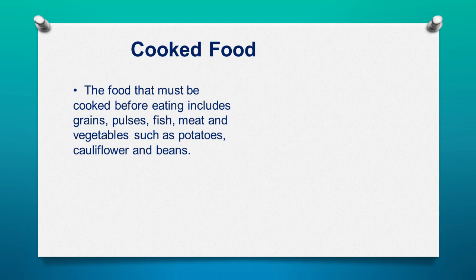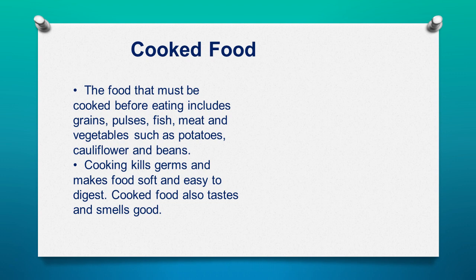The food that must be cooked before eating includes grains, pulses, fish, meat, and vegetables such as potatoes, cauliflower, and beans. Why do you think these food items should be cooked and eaten? These food items should be cooked before eating as it kills the germs and makes the food soft and easy to digest. Cooked food also tastes and smells good.